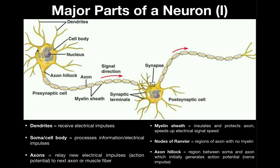The cell body is going to house the nucleus of the neuron and pretty much most of the organelles — endoplasmic reticulum, Golgi apparatus, mitochondria, all that good stuff. That stuff's going to be housed inside the cell body.